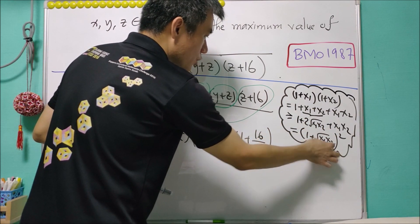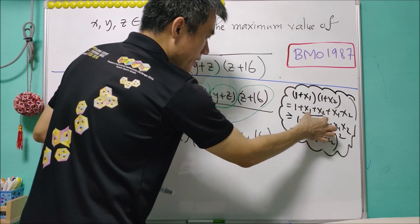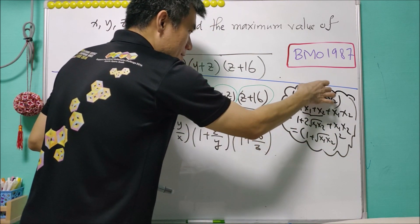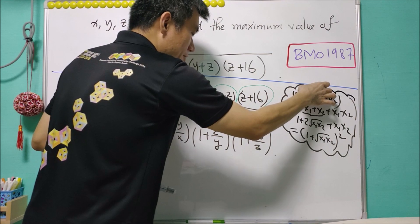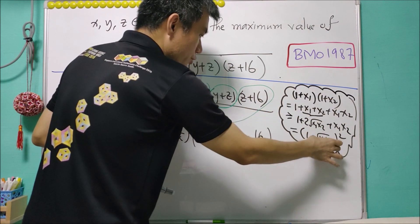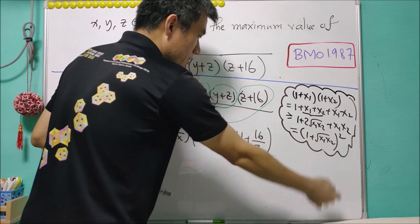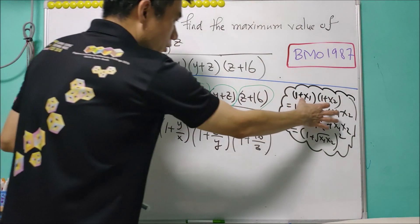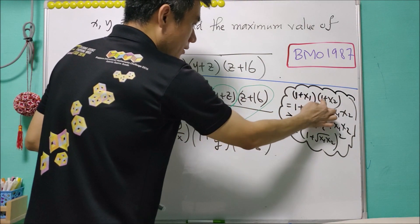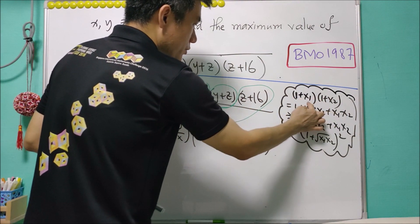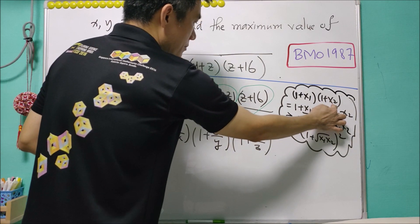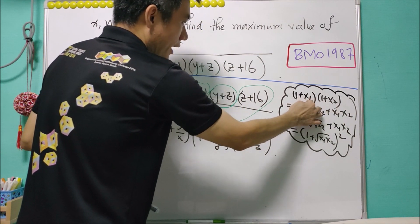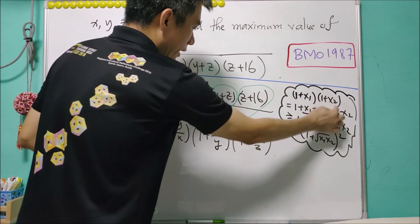This inequality holds because of AMGM — or equivalently, from the first step we can jump to the conclusion using the Cauchy inequality. The equality holds if and only if x1 equals x2.